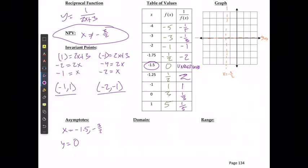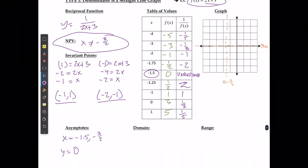I'm going to start with my invariant points where I have the one at negative 2 and negative 1, and negative 1 and positive 1. So I'm going to have an invariant point that exists here and here.